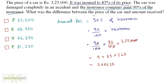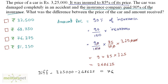What was asked is the difference between the price of the car and the amount received. So the difference equals the price of the car, 3,25,000, minus the amount received, 2,48,625, which equals 76,375. So the answer is option C: 76,375.